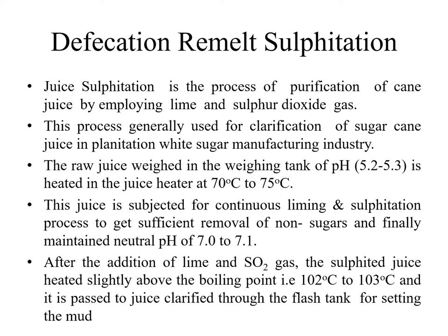The raw juice, weighed in the weighing tank at pH 5.2 to 5.3, is heated in the juice heater at 70°C to 75°C. The juice is subjected to a continuous liming and sulfitation process to achieve sufficient removal of non-sugars and finally maintained at a neutral pH of 7.0 to 7.1. After the addition of lime and sulfur dioxide gas, the sulfited juice is heated slightly above the boiling point — 102°C to 103°C — and passed to the juice clarifier through the flash tank for settling of the mud.